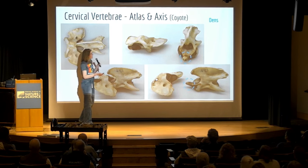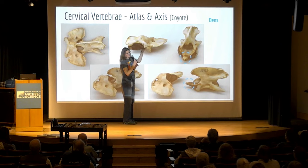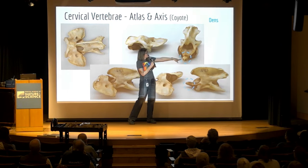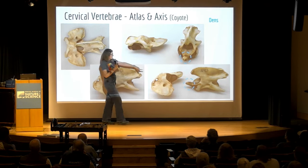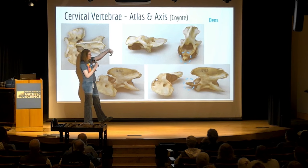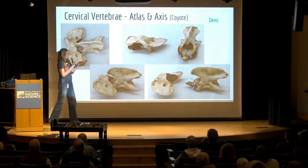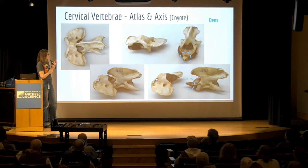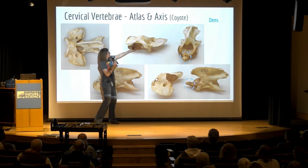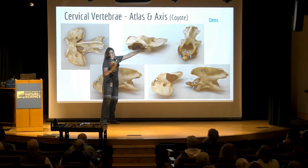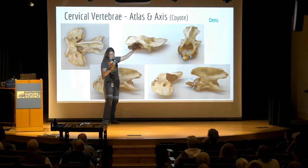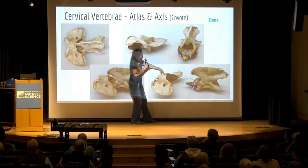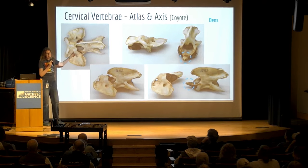One of the big structures to be aware of is the dens. This is the atlas; this is the axis. The axis is going to have this process on it called the dens, which when articulated kind of sticks through the atlas. It'll look a little different depending on the species, but all axes are going to have a dens sticking out the front. This is the cranial part of the atlas — what attaches to the back of the skull at the condyles on the occipital bone. This is the joint that lets you do this — the nodding motion.